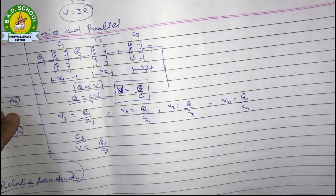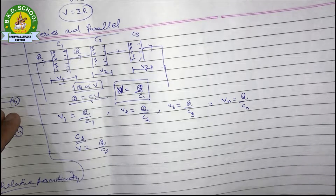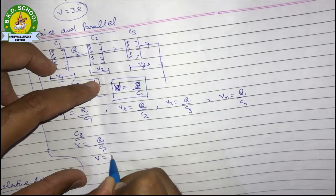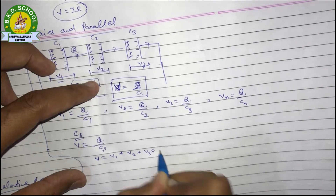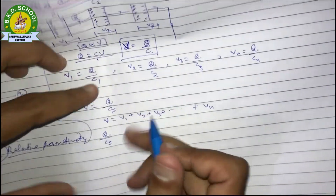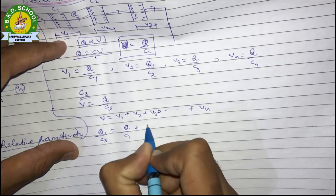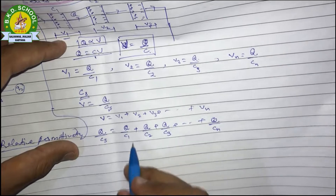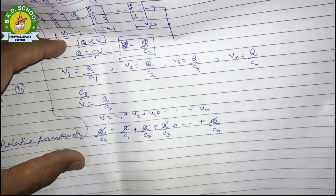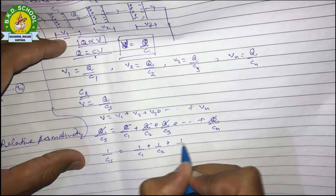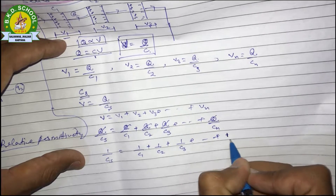Since the total potential drop V across the combination is the sum of V1 + V2 + V3 + ... + Vn, we write: Q/Cs = Q/C1 + Q/C2 + Q/C3 + ... + Q/Cn. Cancelling Q from both sides, the result is: 1/Cs = 1/C1 + 1/C2 + 1/C3 + ... + 1/Cn. This is the result for N capacitors connected in series.